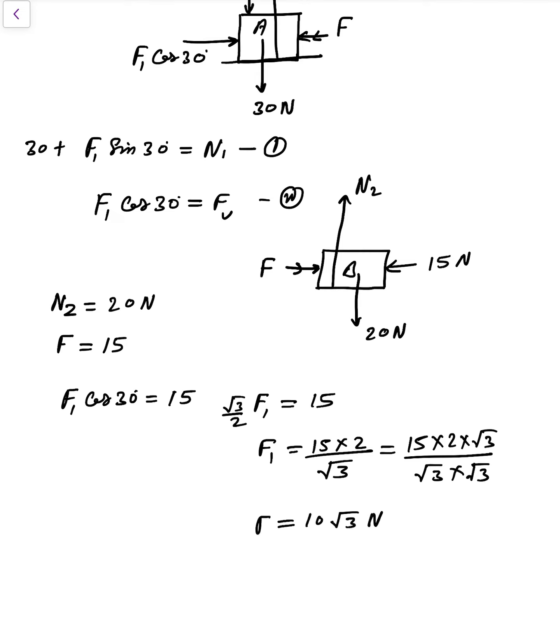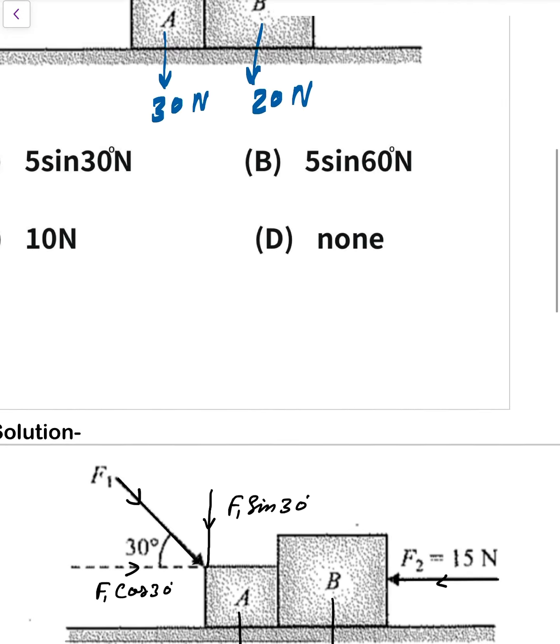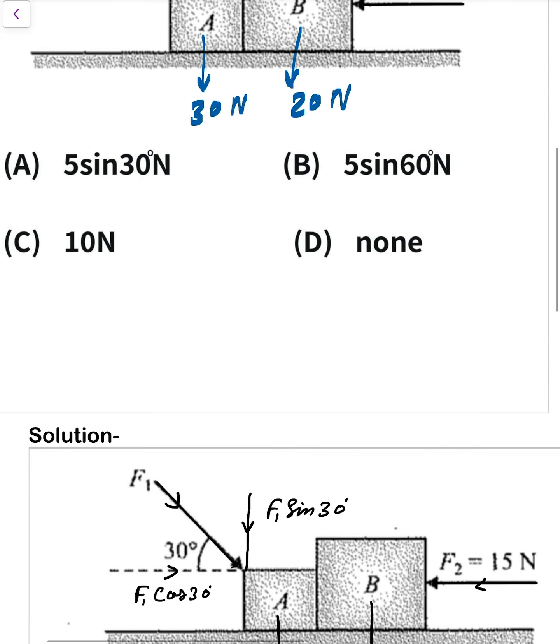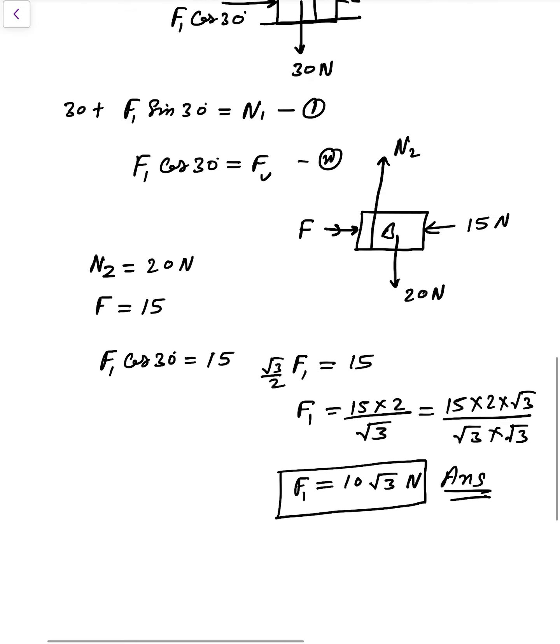10 root 3 Newton. So F1, finally we got 10 root 3 Newton as the final answer. Clear or not? If any doubt, comment it, I will discuss again. So which option is correct? D option, the correct option, none of these.